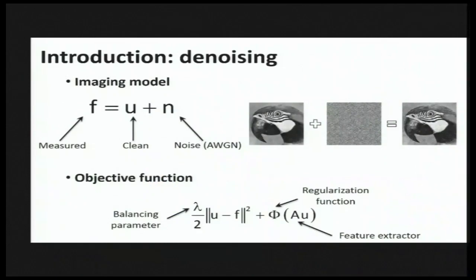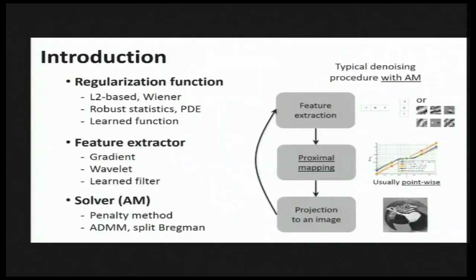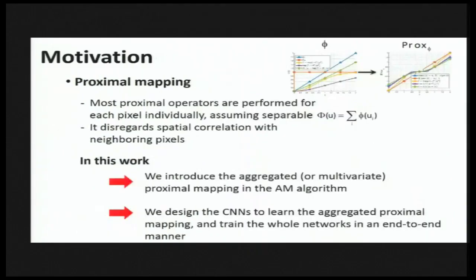We consider the simplest inverse problem: estimating a clean image u from noisy observations. The basic approach is to formulate the data and regularization term and find the minimum using optimization techniques. The typical denoising procedure using alternate minimization can be summarized by three steps: feature extraction, proximal mapping, and producing the turn image. We can use the simple gradient operator or a learned kernel as a feature extractor, and the proximal mapping operator is defined by the regularization term in the objective function.